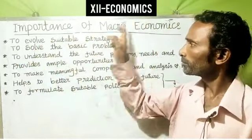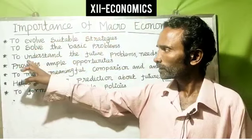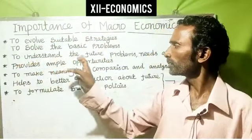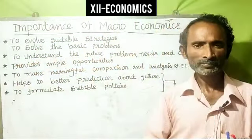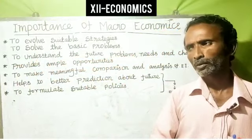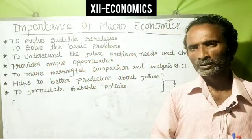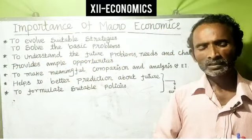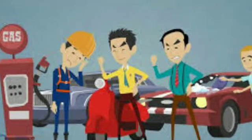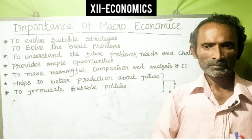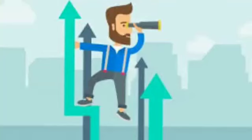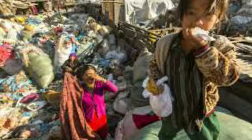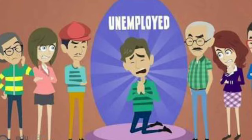Macroeconomics helps us understand future problems. Future problems have a direct connection with present problems. Inflation is one of the present problems. Poverty is one of the present problems. Unemployment is also one of the present problems. There is a direct connection between present problems and future problems.